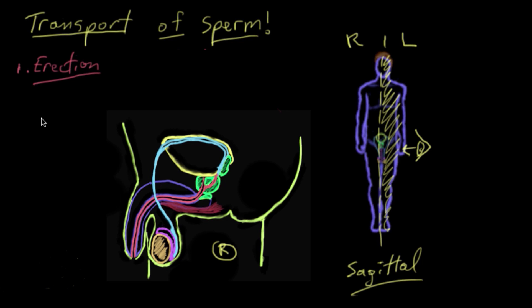The second step in our two-step process is called ejaculation. Ejaculation is basically the expulsion of sperm out of the reproductive tract. So let's go into the mechanisms of how this happens.